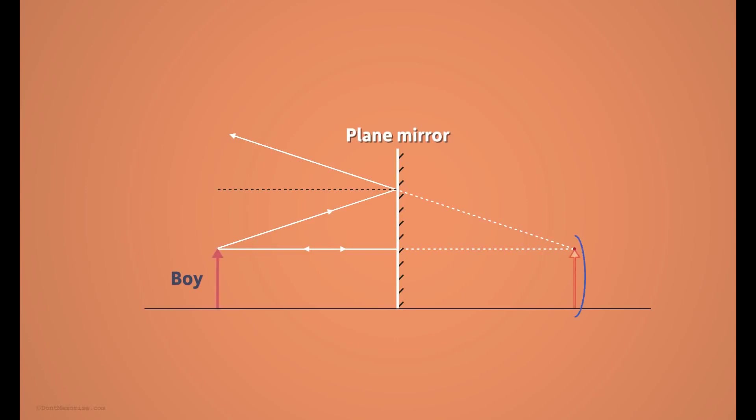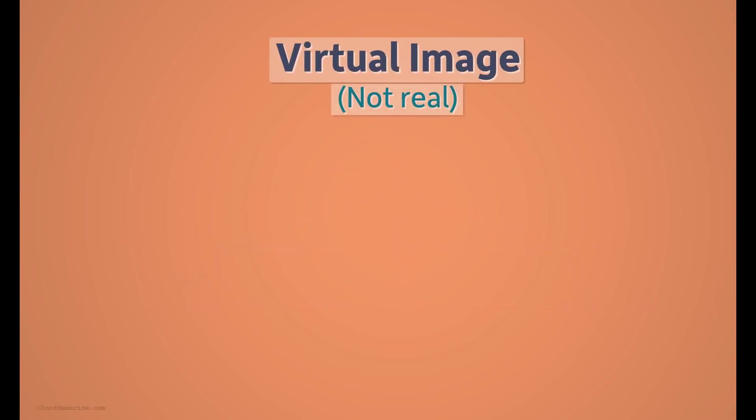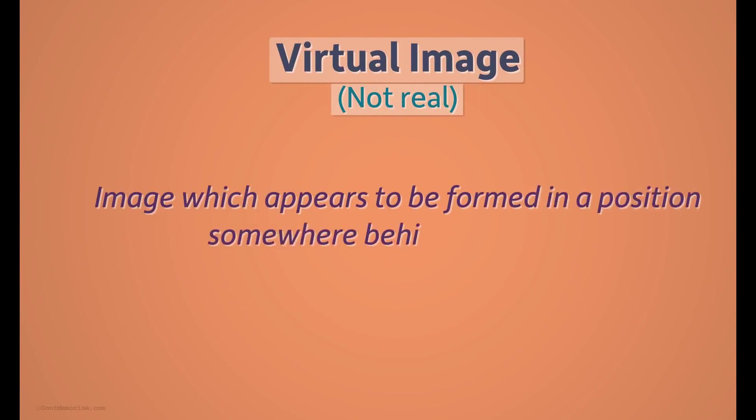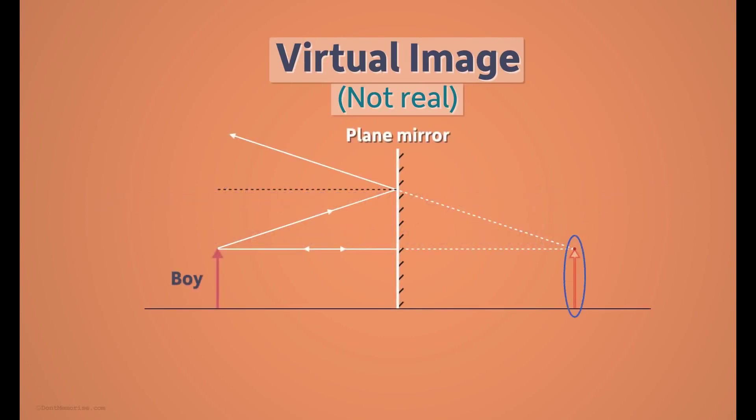So we say that the image formed here is virtual, or in other words, not real. You can think of a virtual image as an image which appears to be formed in a position somewhere behind the mirror. But in reality, it isn't there. A virtual image is formed when the light rays diverge after reflection from the mirror.